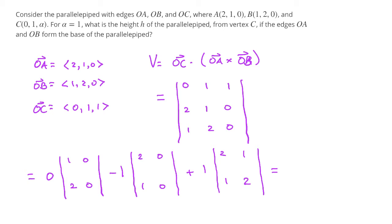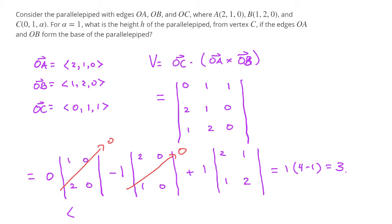For the first two terms, we have columns of zeros, so both of those determinants are going to be 0. For the last determinant, we get 1 times (4 minus 1), giving a value of 3. So the cross product of OA and OB is ⟨0, 0, 3⟩.